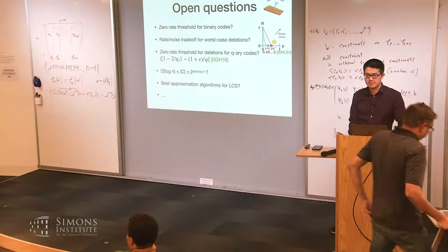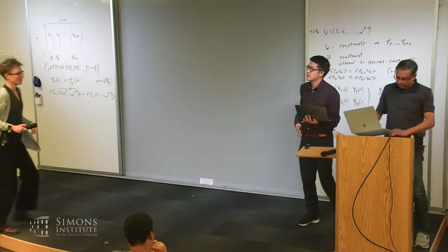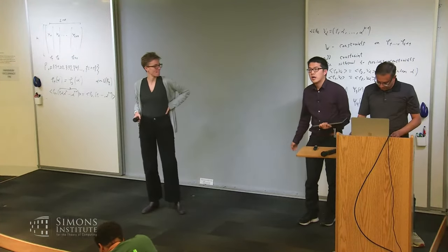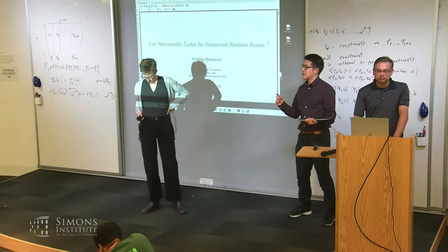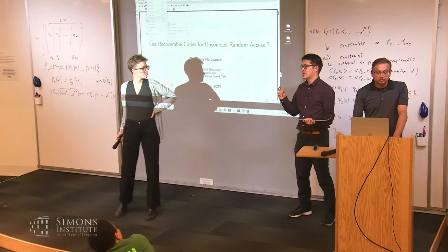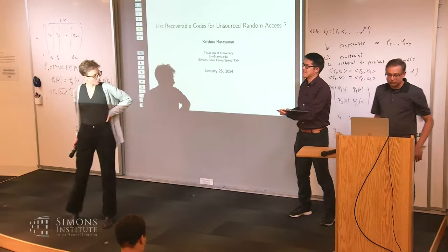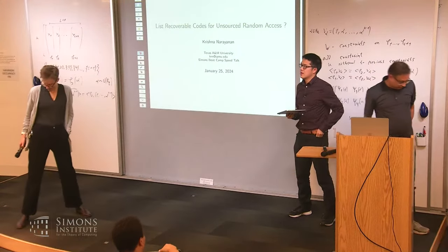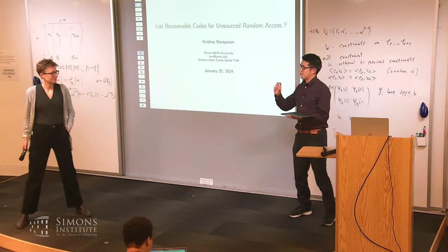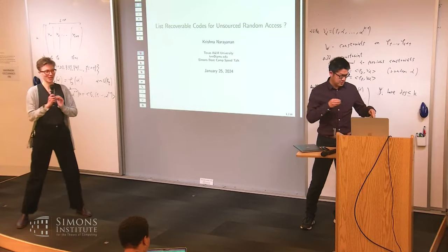We have time for one question while the next speaker sets up. Is the connection between the code and algorithm dependent on the specific epsilon, or is it something more general? It's a slightly different epsilon, but that's more of just when we do the connection it's kind of lossy. If you improve the codes, then you improve the approximation algorithm, but it'll still be bad unless you really refine the algorithm. Let's thank Ray again.